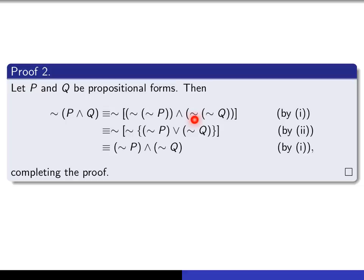So, I have the right to say that this is equivalent to this by i. And now, you'll see a tilde here and a tilde here and there's an and in between. So, by ii, I have the right to say that that's the tilde of the or of this thing here. Okay, so that's exactly what 2 says.